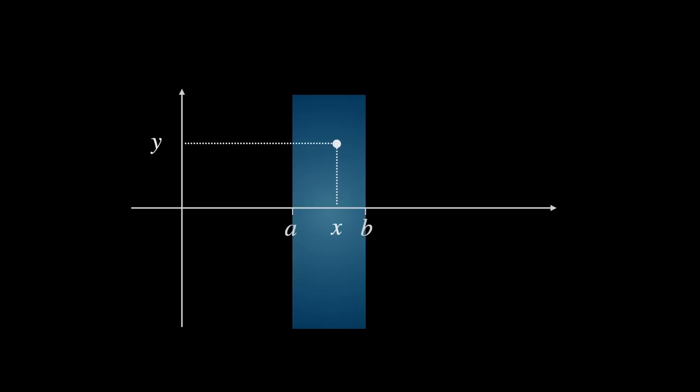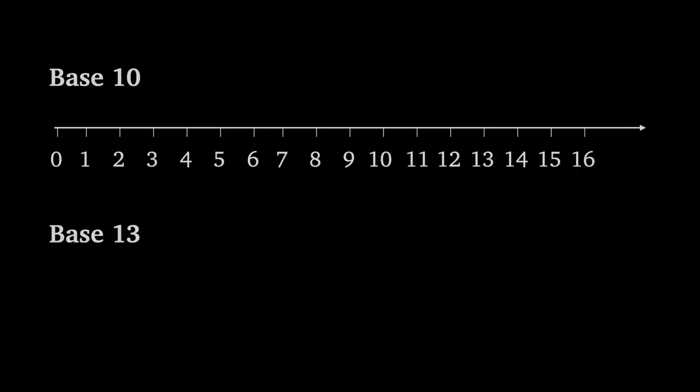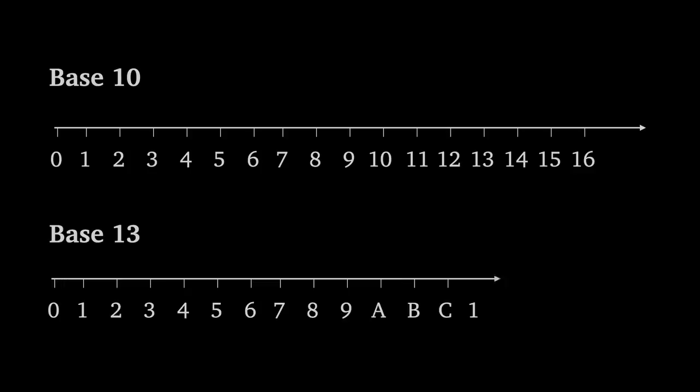There is one catch, however. We do have to work in base 13. We're used to working in base 10, where we have 10 digits, 0 to 9. In base 13, we introduce 3 more digits, represented by A, B, and C, after which the cycle repeats.